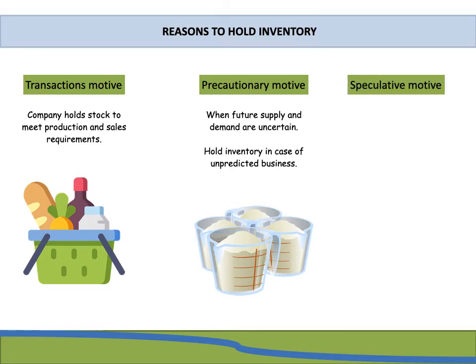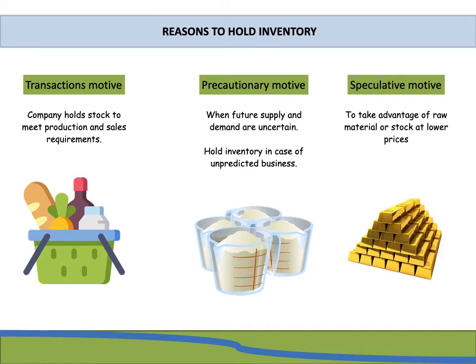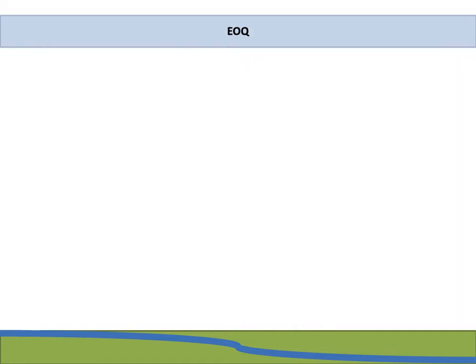The next one would be your speculative motive. This is where an entity would want to take advantage of raw material or stock at lower prices. For example, using our cake shop again - if the supermarkets are selling flour at 50% off, the cake shop is going to try and buy as much flour at that price as it can without running the risk of that stock going obsolete. This reduces the cost to produce the product and means a little bit of extra money in their pocket.